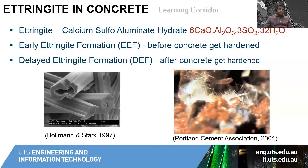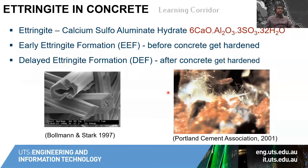Ettringite forms in concrete under normal ambient conditions before the concrete gets hardened, roughly between 0 to 24 hours — that's the time when ettringite forms. But in precast production there is high heat curing temperature, and because of that, the process of ettringite precipitation in the concrete gets altered.